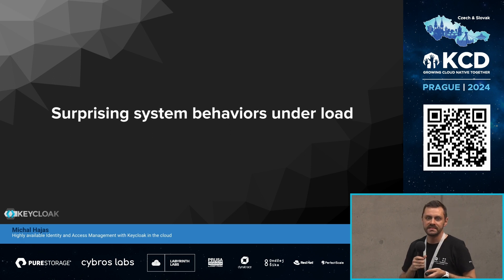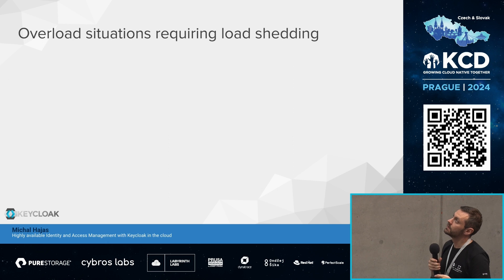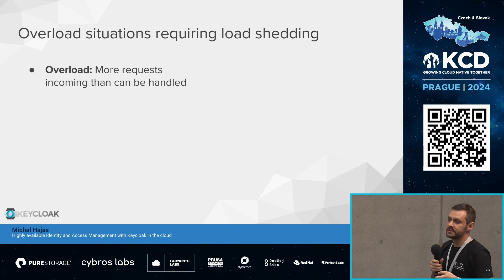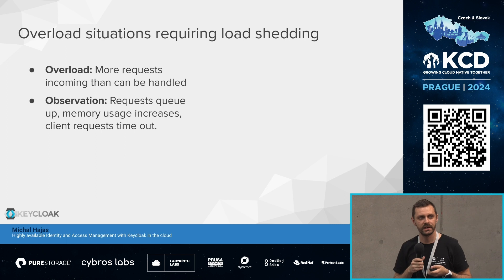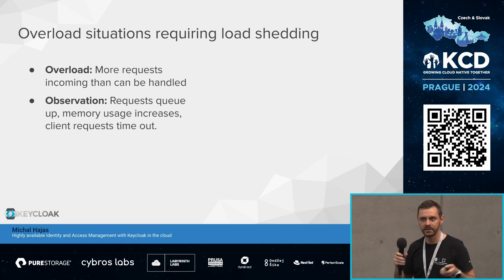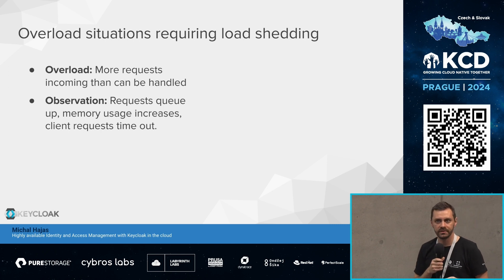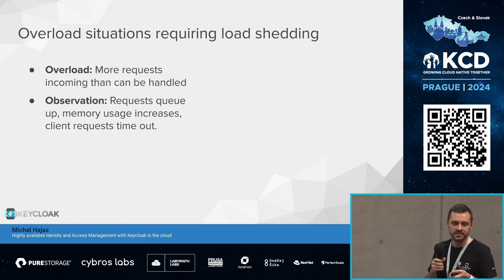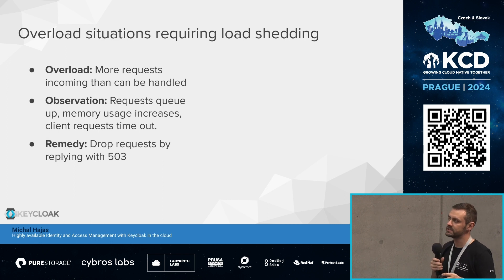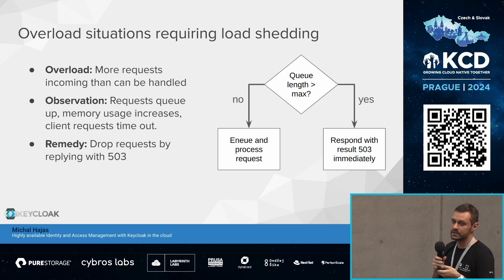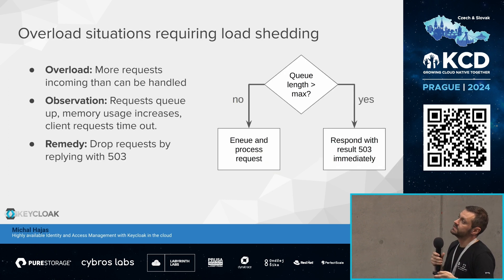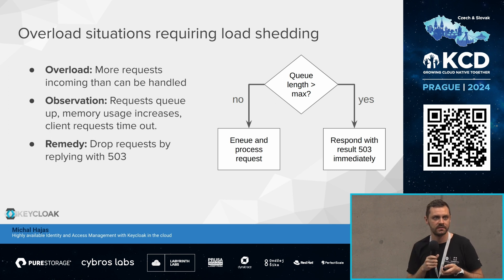Here are some surprising system behaviors we encountered. First, we needed to enable load shedding. Previously, Keycloak was queuing all incoming requests into one long queue. If we received more requests than we could handle, the queue grew very large, causing clients to wait until timeout and memory usage to increase significantly. The remedy: drop requests when the queue is full. We set a maximum queue length — say 1000 — and if there are already 1000 requests queued, new ones are dropped. This helps Keycloak with lower memory consumption and helps users quickly see the system is under load and they need to retry.